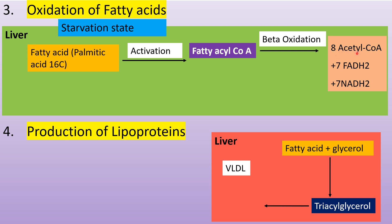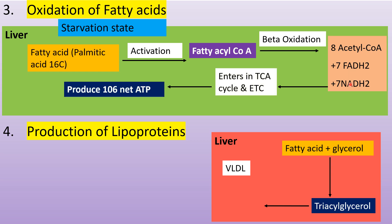Acetyl CoA goes into the TCA cycle, and FADH2 and NADH enter into the electron transport chain, forming 106 ATP. By the oxidation of fatty acid, ATP is produced in the starvation state.